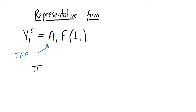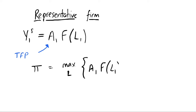We're looking at a representative firm that maximizes profits, denoted by pi. The only thing this firm is choosing is their labor — that's the only input in this model. Output only comes from increasing labor; we don't have any capital at the moment. The firm maximizes profits which come from output, but there is a cost: we assume a variable cost of employing more labor, paying workers w for every hour worked.